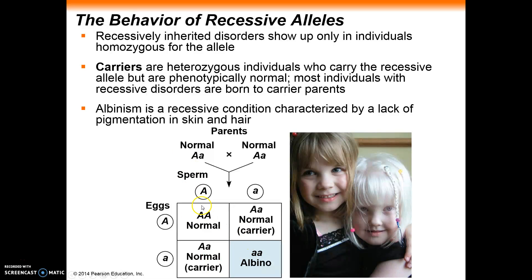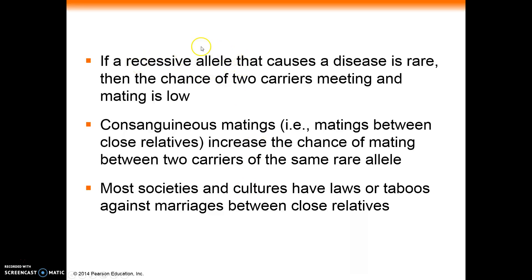Albinism follows a typical recessive pattern. If you built a pedigree chart for it, you could start tracing this back through generations — people probably would have noticed, 'Oh yeah, grandma was an albino too.' Now if a recessive allele is rare and causes some type of disease, the chance of two carriers meeting and mating is fairly low.